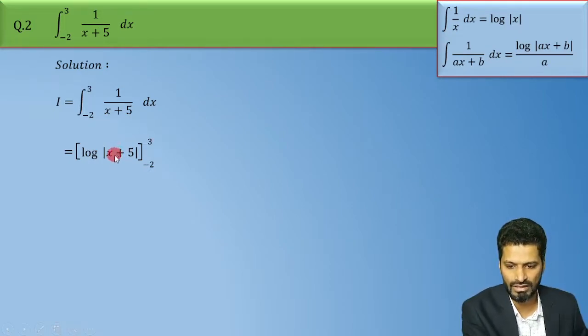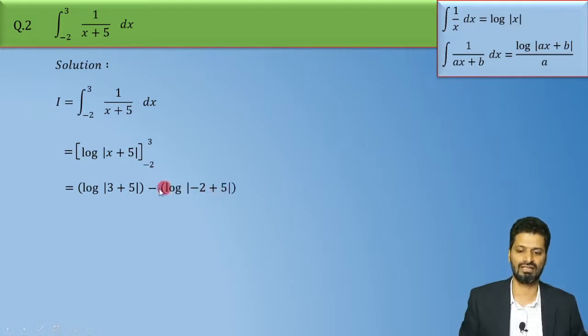To yeh hoga 3 substitute karne pe log of 3 plus 5 minus log of minus 2 plus 5, correct. Upper limit minus lower limit.